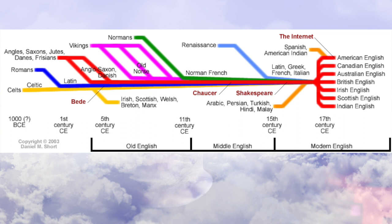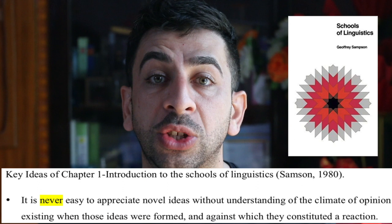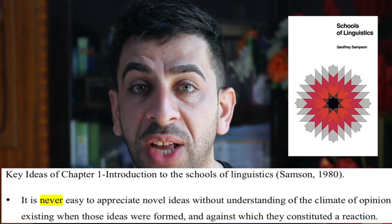These are key ideas I wanted to highlight from the book of Sampson related to the study of language. Geoffrey Sampson in 1980 wrote a book called The Schools of Linguistics, and in this book he highlighted some outstanding aspects of the study of language and its progress. The first highlighted concept is that it is never easy to understand the new ideas presented in the field of linguistics without understanding the common climate — the political climate and social climate — that surrounded these ideas at the time they were presented.